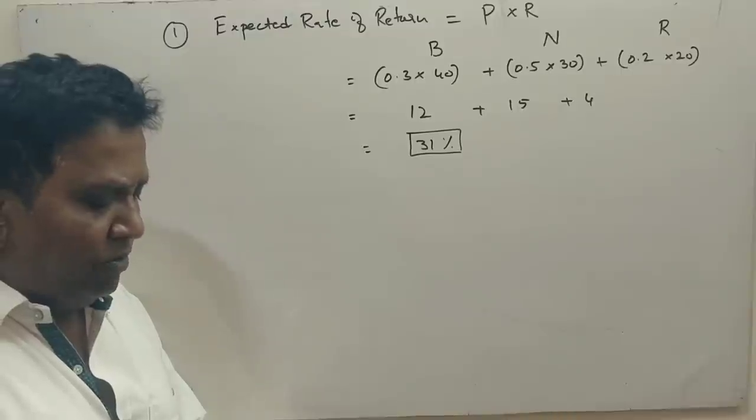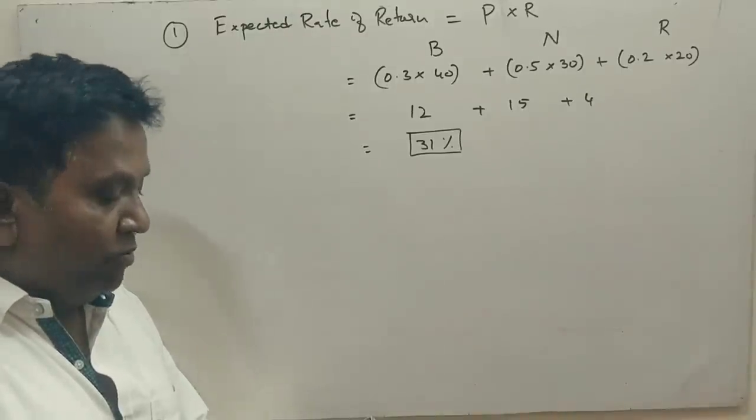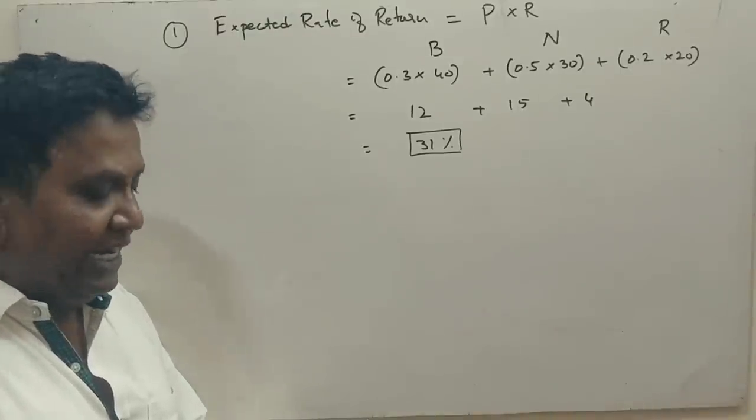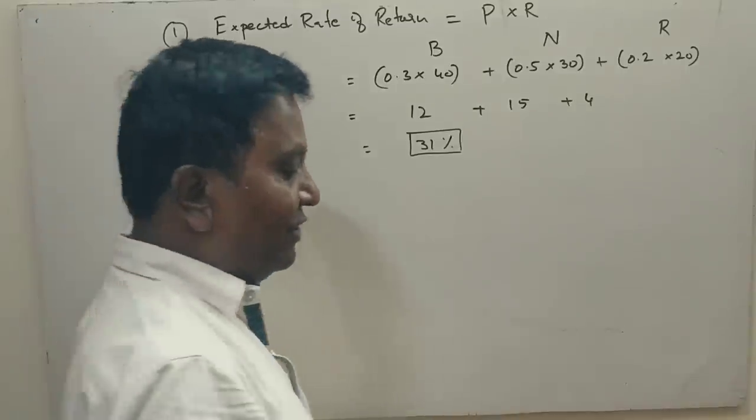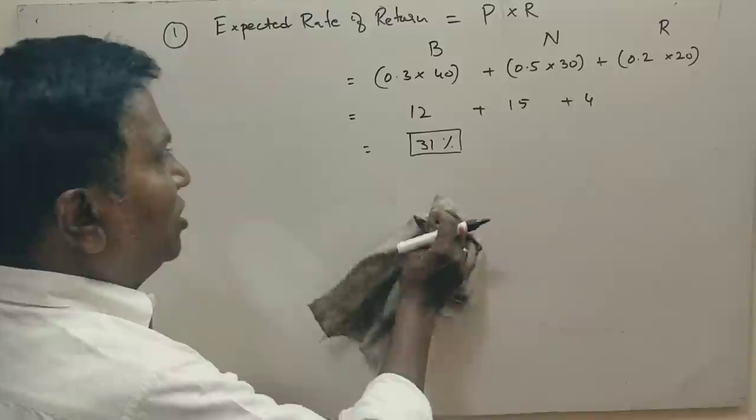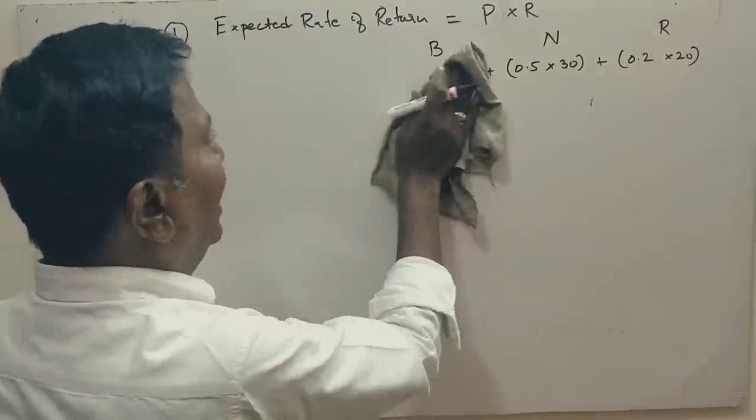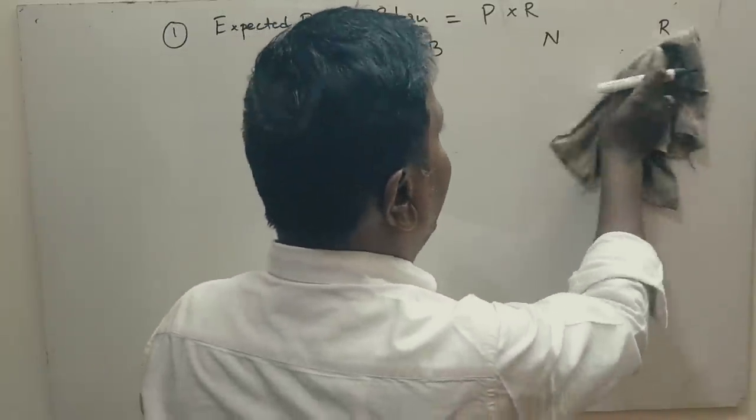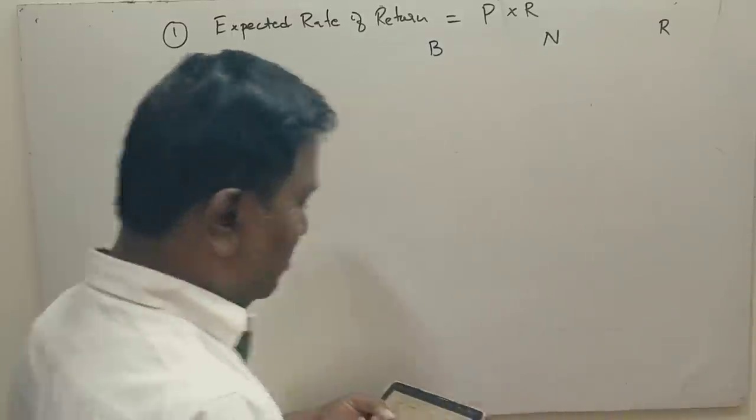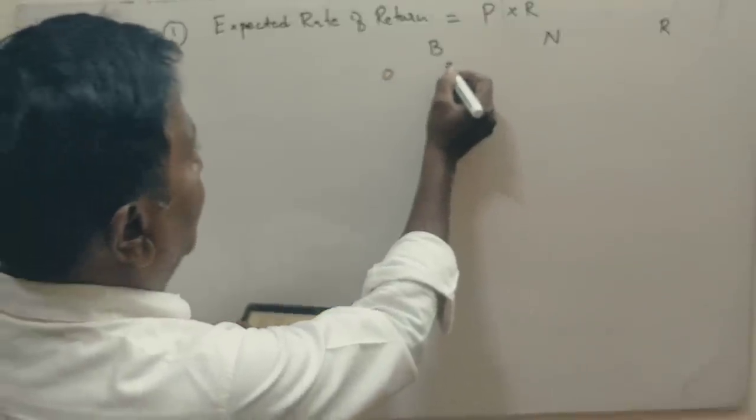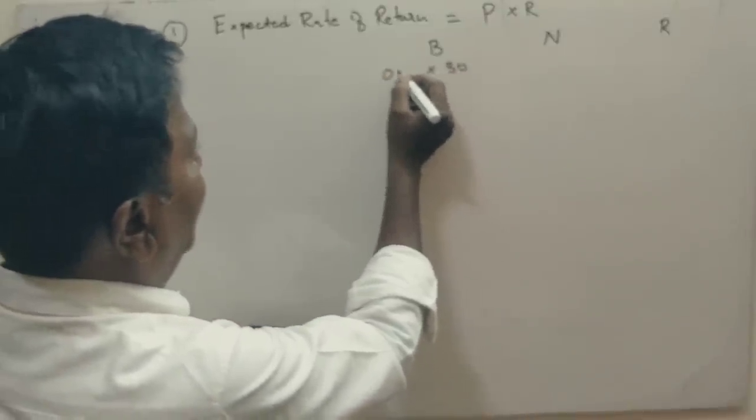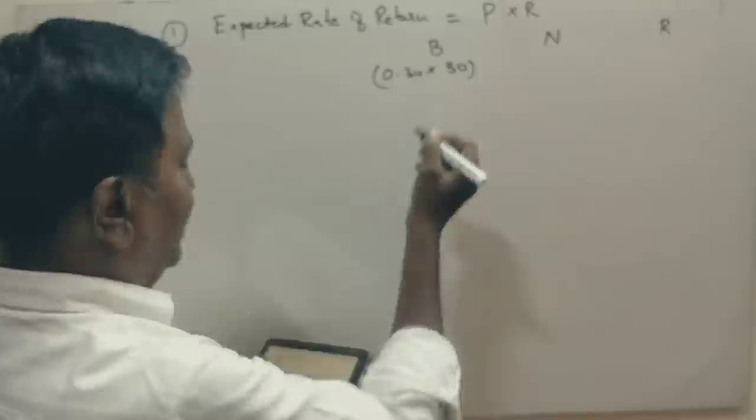Here also we have boom period, normal period and recession period. And the probability are little different. And also returns also different. Now, let us find out how to calculate the expected return for this problem. The return is 30 rupees. And the probability of getting return is only 30%.